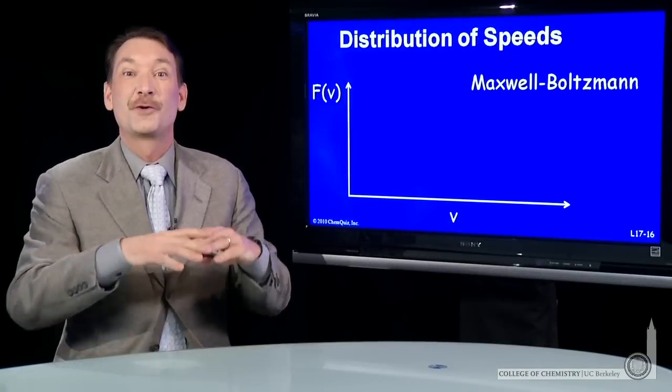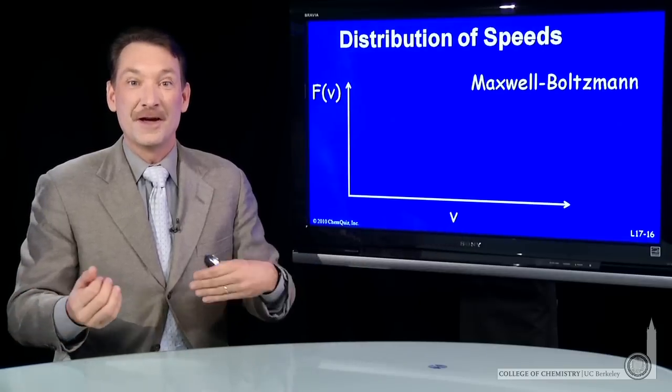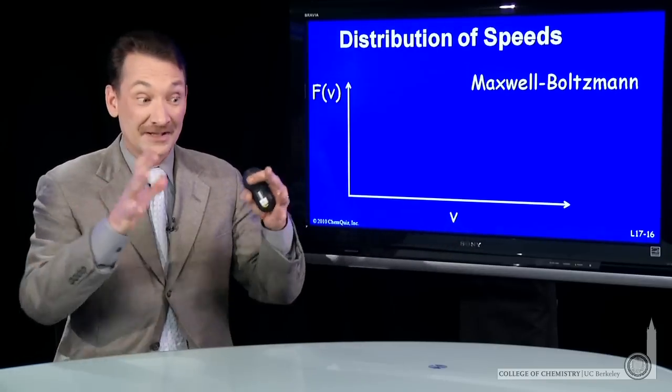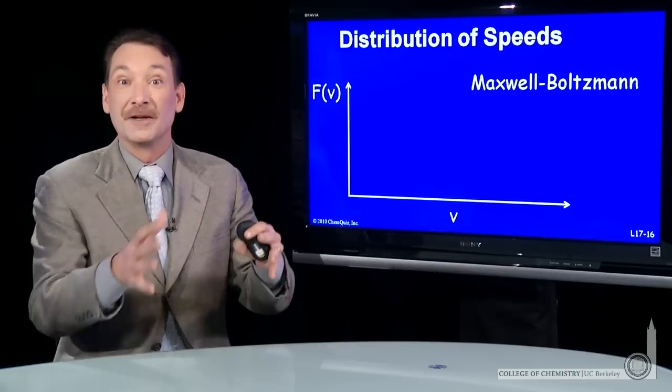In a sample of gases, you have a great distribution of speeds. You have some particles moving very rapidly, some particles moving very slowly, and a lot of particles moving in the middle.